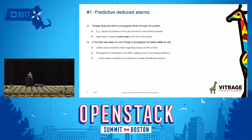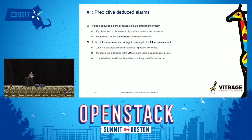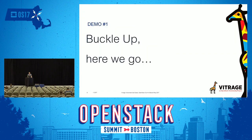Let's talk about the first scenario: predictive deduced alarms. Vitrage propagates faults through the system — for example, if we have an interface down connected to a host, we'll have an error on the virtual machine. In the predictive state, we'll see Vitrage propagate future state as well. Zabbix will predict a CPU stress test, propagate this information to the virtual machines, and notify users of upcoming problems so they can address the problem more effectively. Let's start the demo.